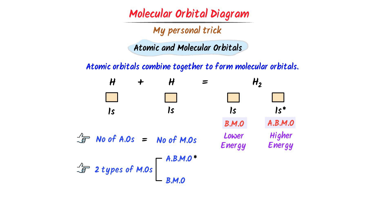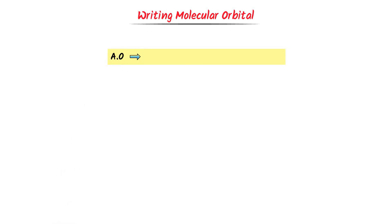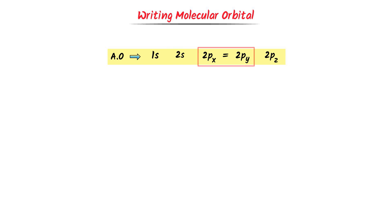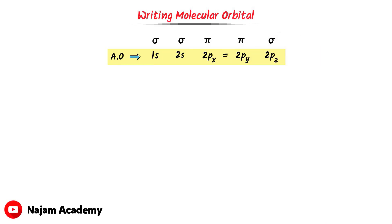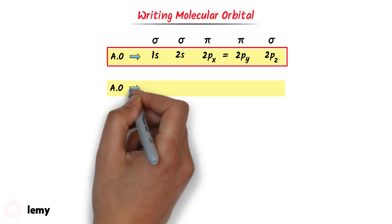Now we will learn writing molecular orbitals. I write the atomic orbitals: 1s, 2s, 2px, 2py, and 2pz. Remember that the energy of 2px is equal to 2py, so I put an equal sign between them. Now: 1s forms a sigma bond, 2s forms a sigma bond, 2px forms a pi bond, 2py forms a pi bond, and 2pz forms a sigma bond. I take these atomic orbitals and write them here.